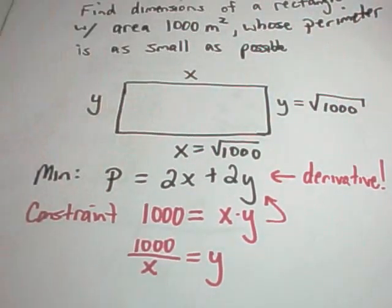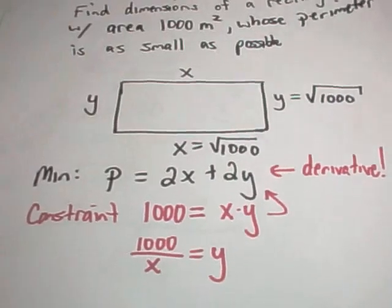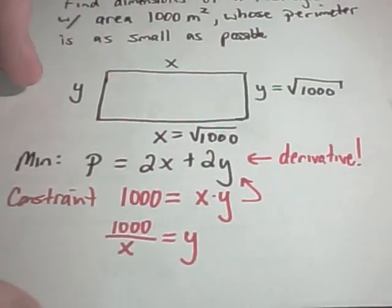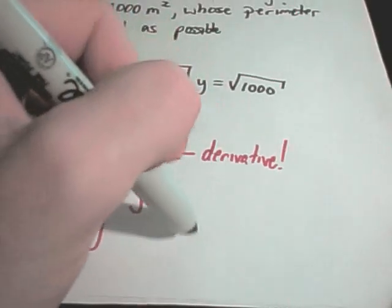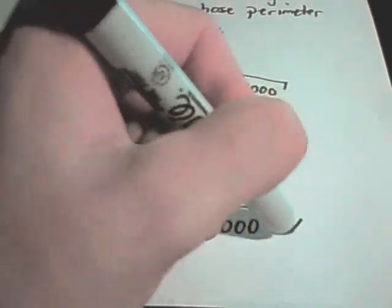Y would also have to equal square root of 1000. It turns out that I've actually got a special type of rectangle, namely my rectangle is a square. Your dimensions in this case would simply be the square root of 1000 times the square root of 1000.